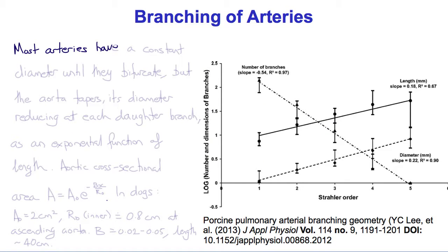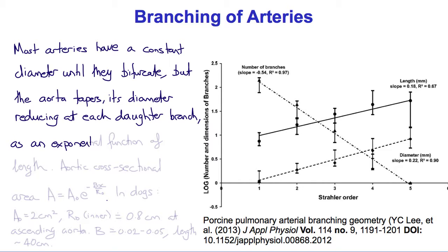Most arteries have a constant diameter until they bifurcate, but the aorta actually tapers, its diameter reducing each time a branch comes off it, and an empirical formula of an exponential function has been used to describe the change in the aortic cross-sectional area as it goes down its length.